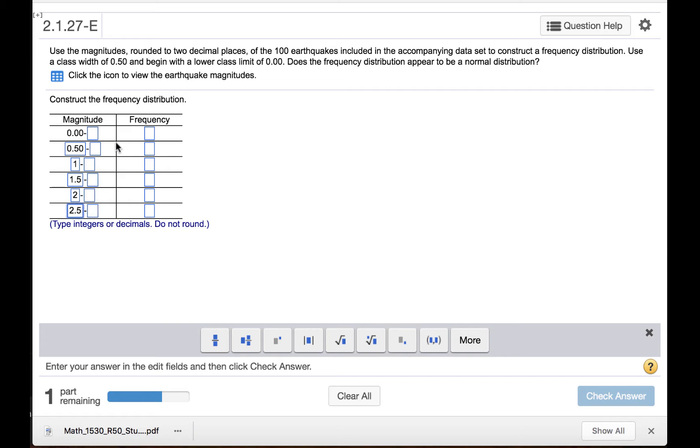Now the classes must be non-overlapping. Our measurement precision is to the hundredths place. So we will subtract 1 hundredth from each of these lower class limits to get the upper class limit for the previous class. So this will be 0.49, and then 0.99, 1.49, 1.99, 2.49, and 2.99.